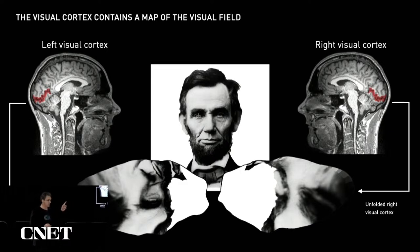For example, if you look at this image of Lincoln, if you look directly into his right eye, everything to the left of that fixation point is directed to your right visual cortex, and everything to the right goes to your left visual cortex.